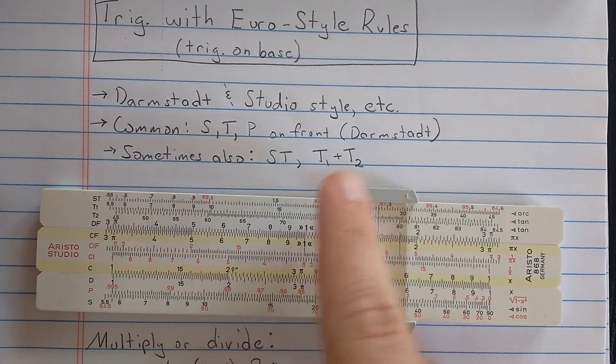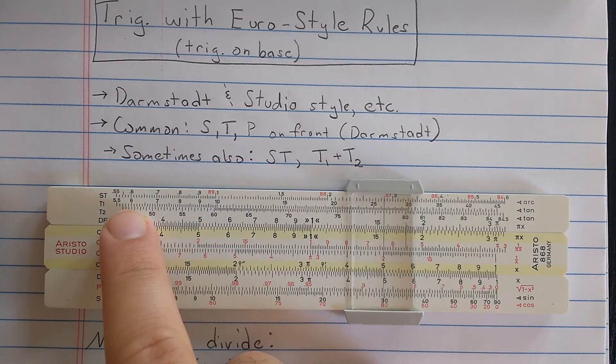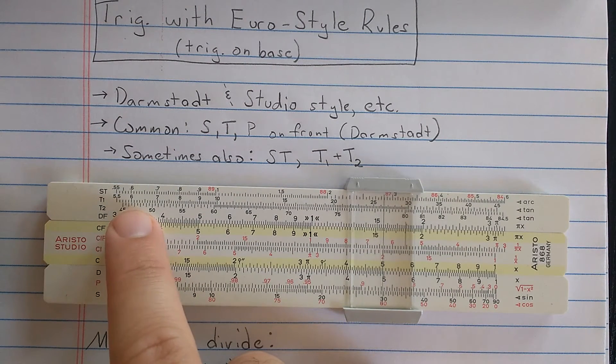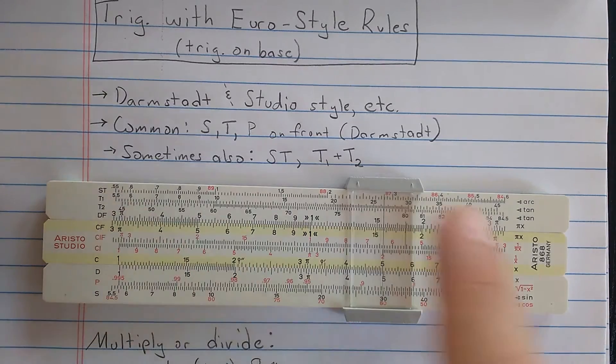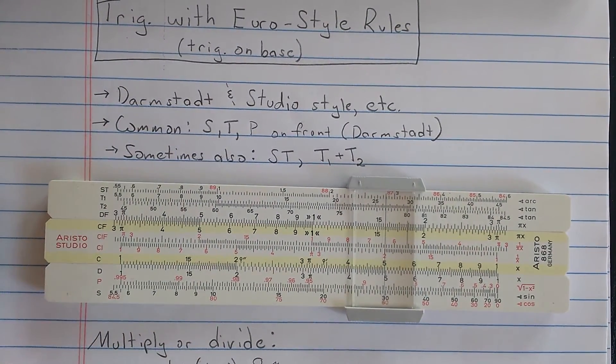Sometimes you also have S, T, and sometimes you have two tangent scales instead of one like you do on this slide rule. These two tangent scales are for ranges up to 45 and greater than 45 as we discussed in other videos.